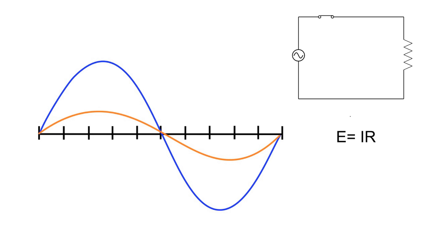When I say they're in phase, let's look at the two sine waves. We've got a blue one, which is my resistor voltage, and we have the current waveform. As the voltage goes up and down, the current goes up and down at the same rate — they cross the x-axis at the same time. The volt drop across the resistor is a product of the current going through it. This is Ohm's law: E = I × R.